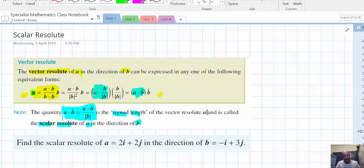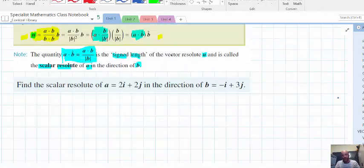Alright, so it's the signed length of U, which was this. And it's called the Scalar Resolute, it'll be a Scalar Quantity. So, let's do an example. Find the Scalar Resolute of A in the direction of B. So we're expecting a real number or Scalar answer.